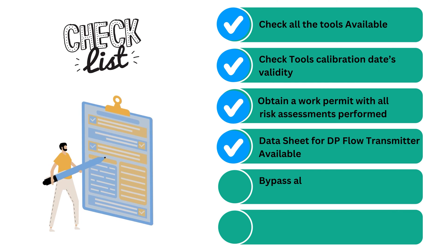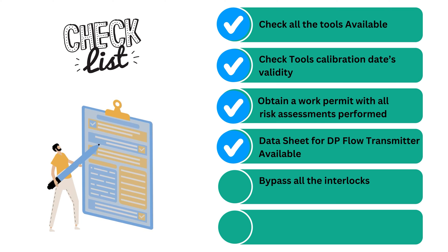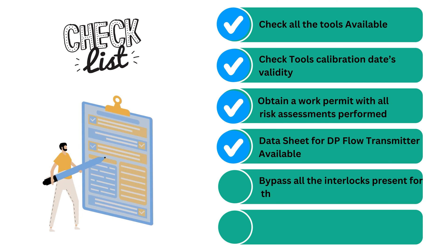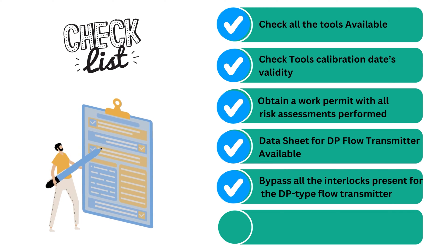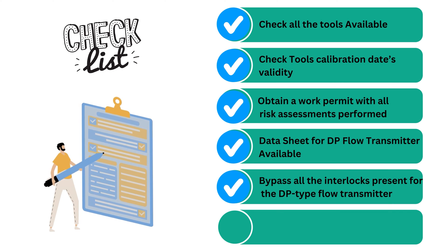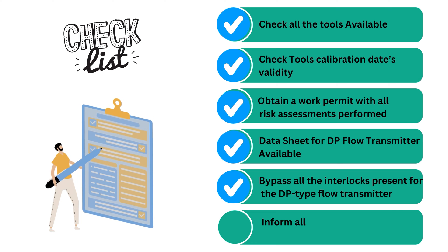Bypass all the interlocks present for the DP type flow transmitter, follow the proper bypass procedure and fill out all necessary interlock bypass requests, and inform all involved process operators.